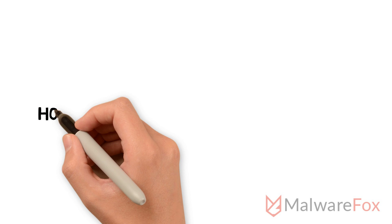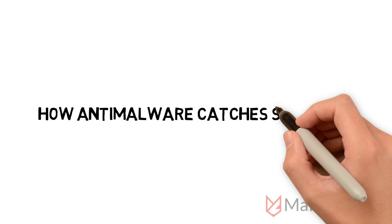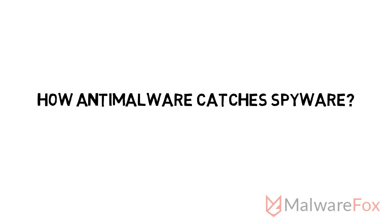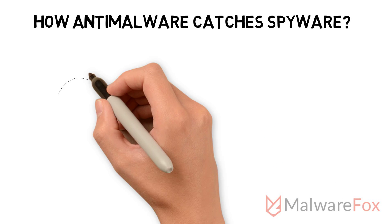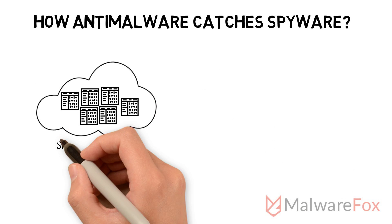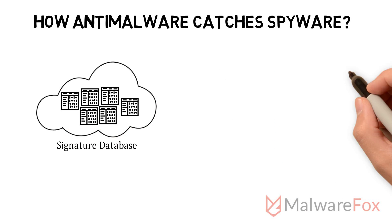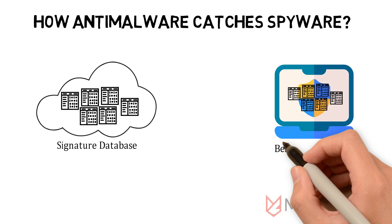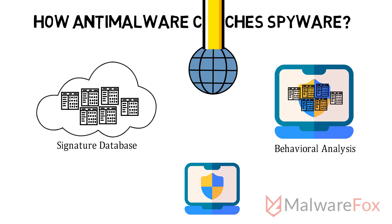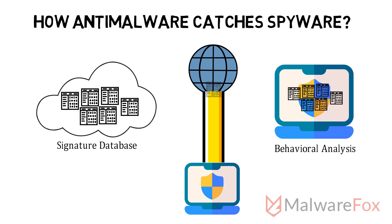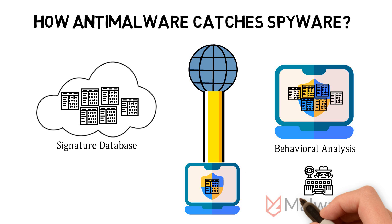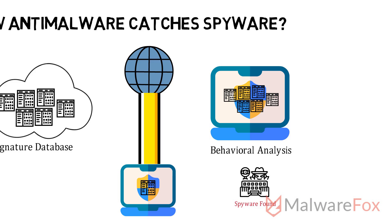How anti-malware catches spyware: To catch spyware, anti-malware uses signature-based and behavior-based detection. Anti-malware also monitors the internet connection and filters out the spyware.